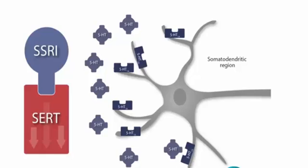If we compare this image with the previous illustration showing the somatodendritic region, the difference is that you can see an increase of serotonin concentration. This has implications in terms of regulation of 5-HT1A receptors.